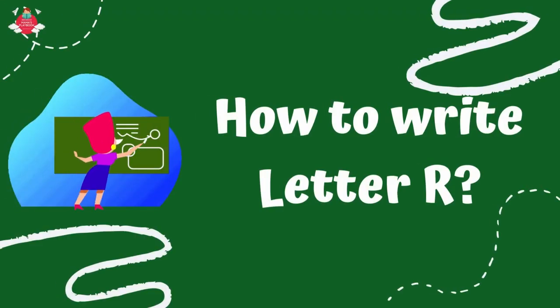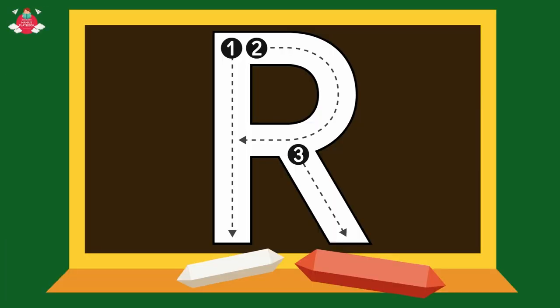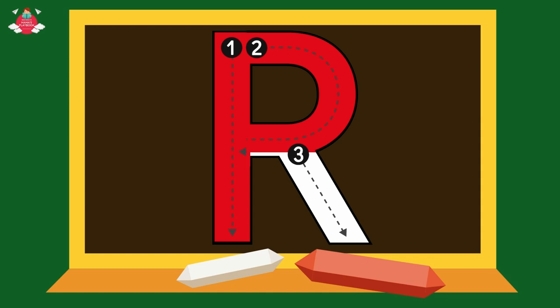Now let's learn how to write the letter R. First, we start with capital R. Start from the top and draw a standing line down. Go again to the top and draw a curve till the middle. Then draw a slanting line to the bottom.